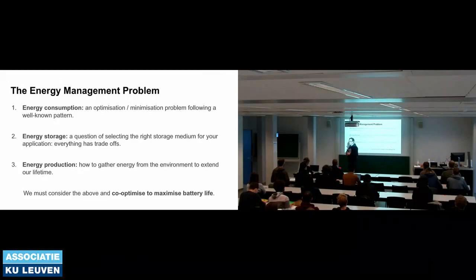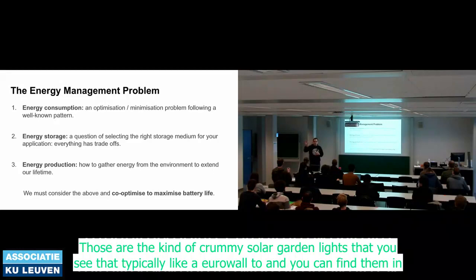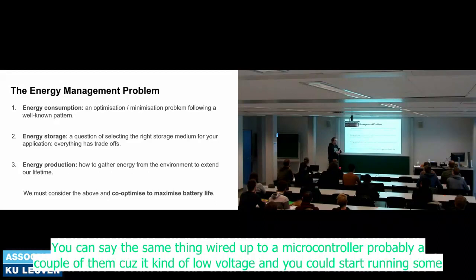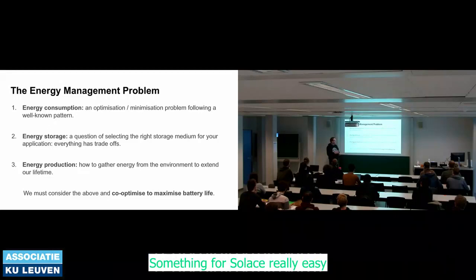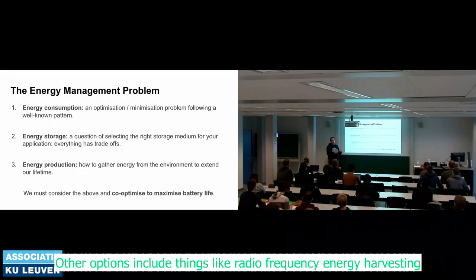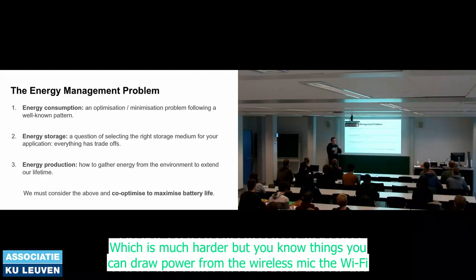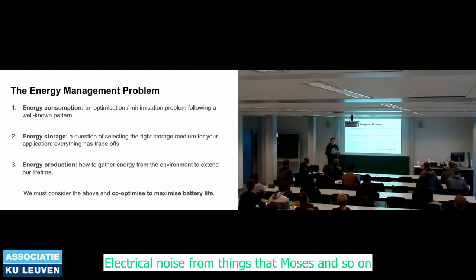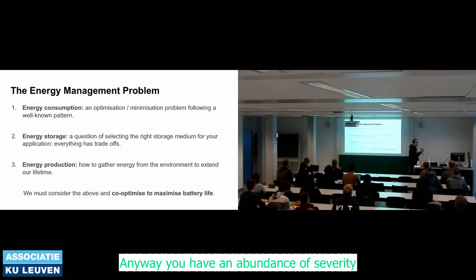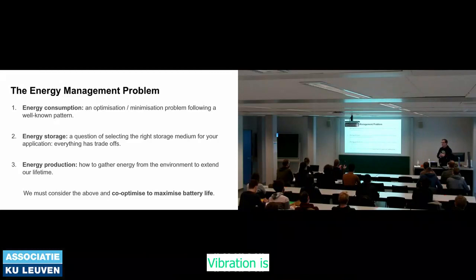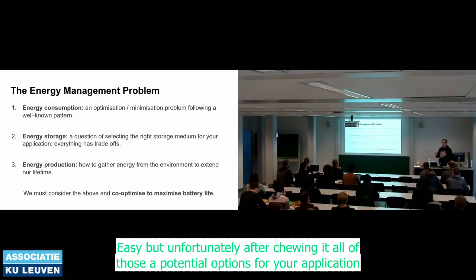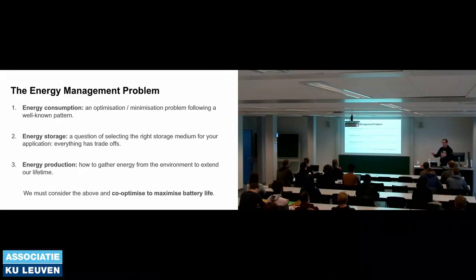Solar power is a great example — those cheap solar garden lights can be wired up to a microcontroller to start running something. Other options include radio frequency energy harvesting (drawing power from Wi-Fi or electrical noise from motors), as well as thermal energy and vibration harvesting. Unfortunately vibration harvesters need tuning. For many of these you can just buy a plug-in module that gives you a certain amount of energy.